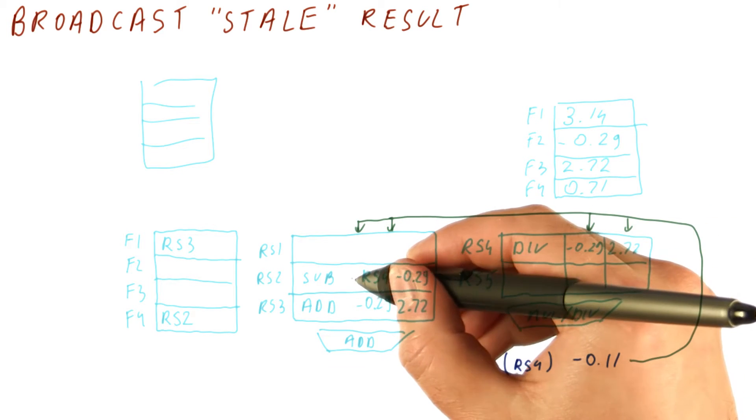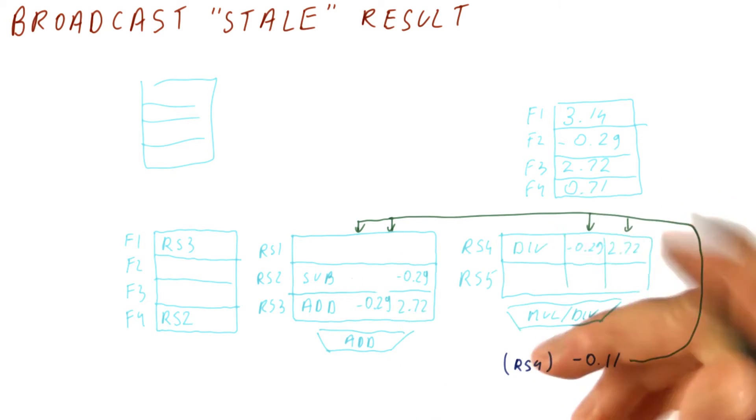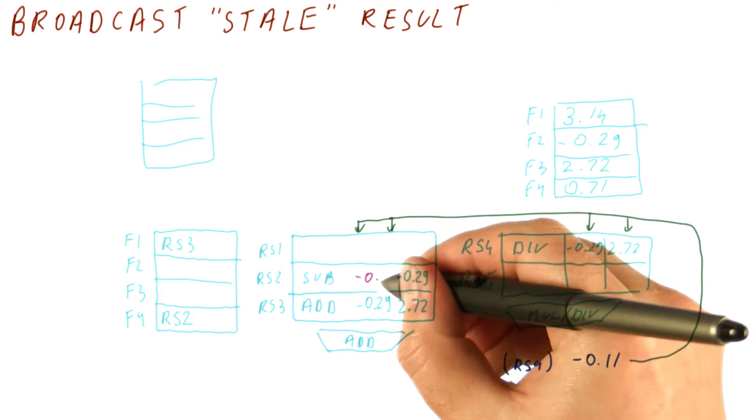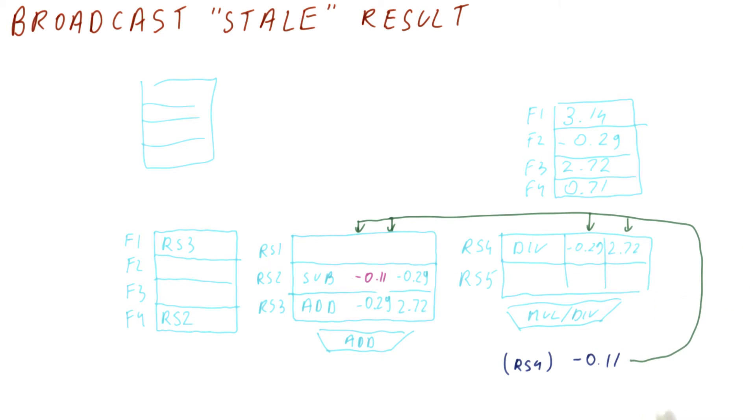So in this case, we're going to write, instead of this RS4 here, we're going to get minus 0.11. Okay? That's the only match, so we are done.